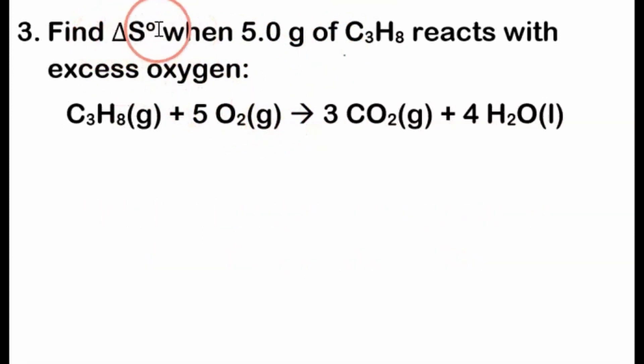Find the change in entropy, standard entropy change, when 5.0 grams of C3H8, this is propane, reacts with excess oxygen, and we have a chemical equation here that looks balanced. 3 carbons, 10, 4 plus 6, 10 oxygens, and there's 8 hydrogens, 8 hydrogens. Okay, so we're balanced.